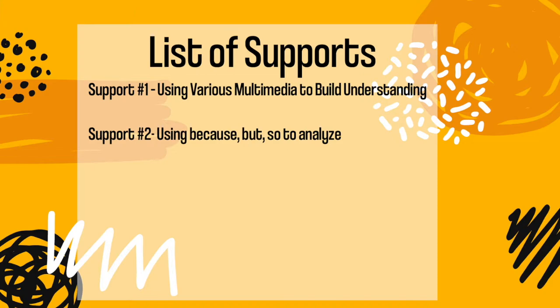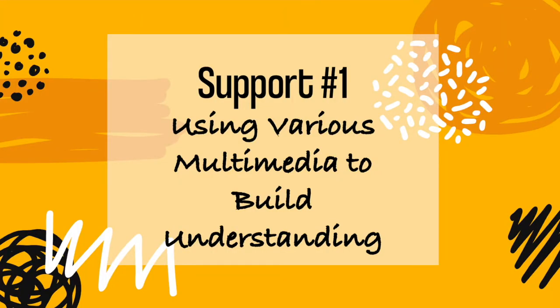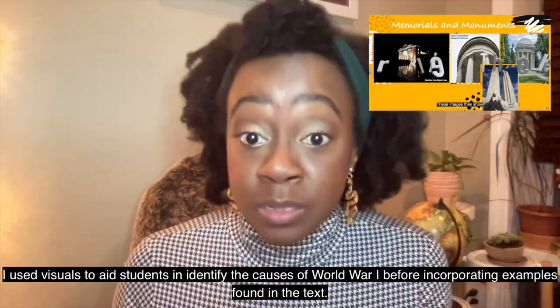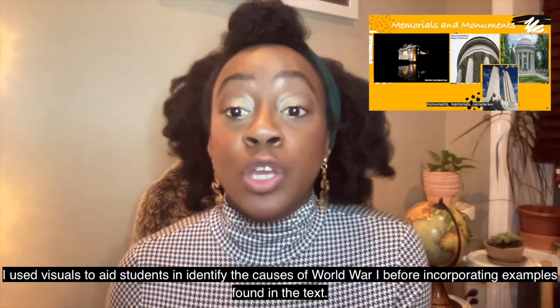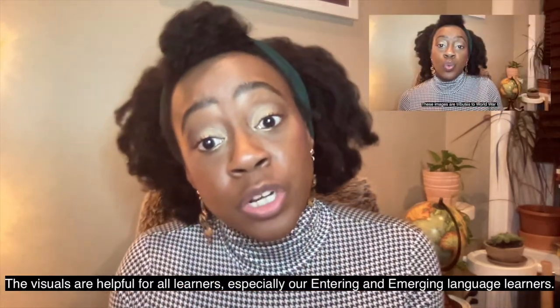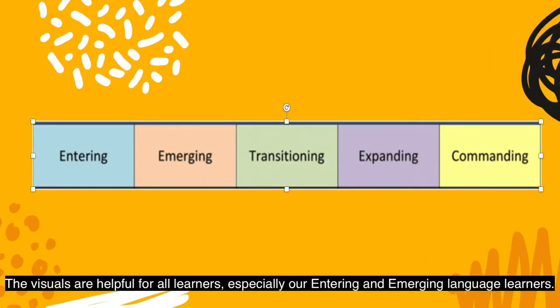Now let's discuss the supports provided for the student-facing video: analyzing causes of World War I with 'because, but, and so.' Support number one: we use various multimedia to build understanding. Similar to the student-facing video on three ways to identify causes and effects in the reading, I use visuals to aid students in identifying the causes of World War I before incorporating examples found in the text. The visuals are helpful for all learners, especially students who are entering and emerging learners.